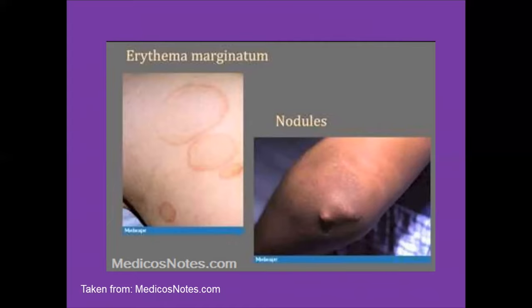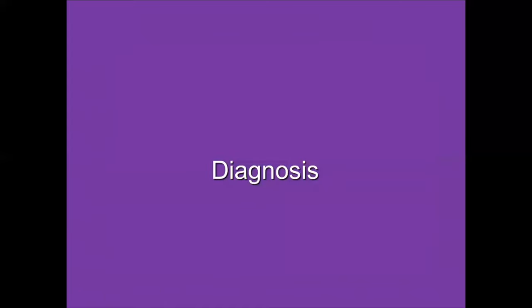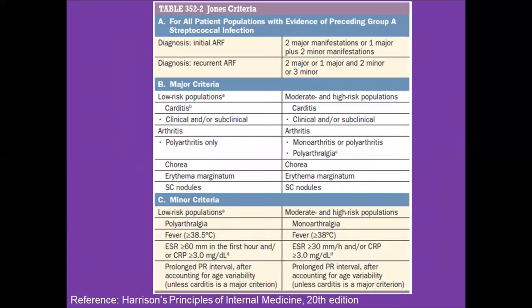For diagnosis, there is no single test for acute rheumatic fever. We use the Jones criteria, which has major and minor criteria. For the initial diagnosis, a patient must meet two major criteria, or one major plus two minor manifestations. For recurrent ARF, two major, one major and two minor, or three minor criteria are used.